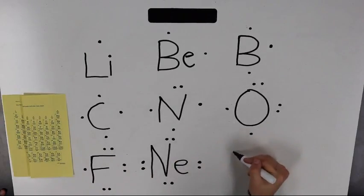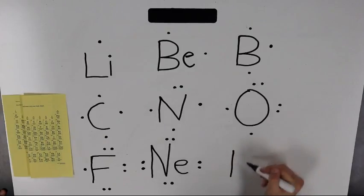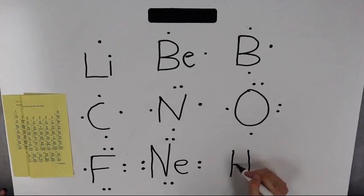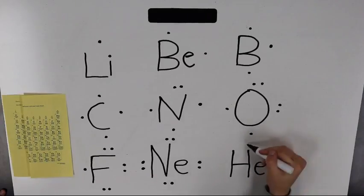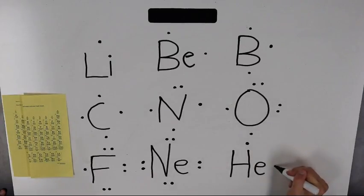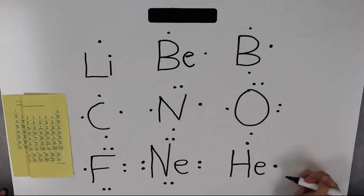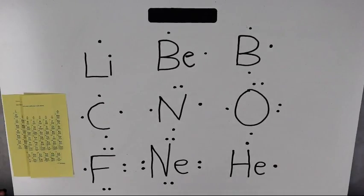In summary: first write the symbol of your element. Next, draw the number of dots shown in the Roman numeral above the A column. Put a dot at each cardinal point going clockwise. Make sure each dot is at each cardinal point to represent valence electrons.